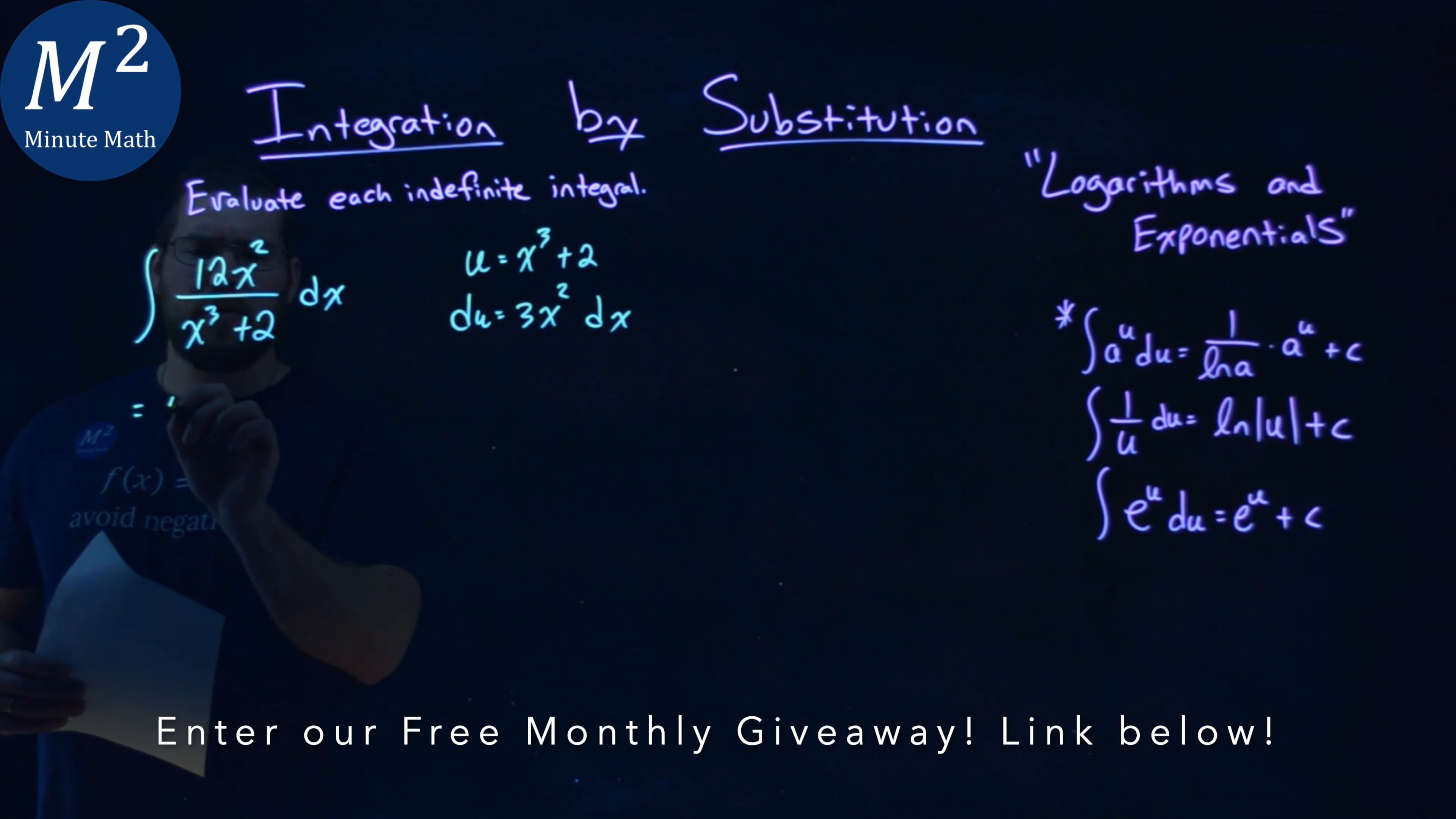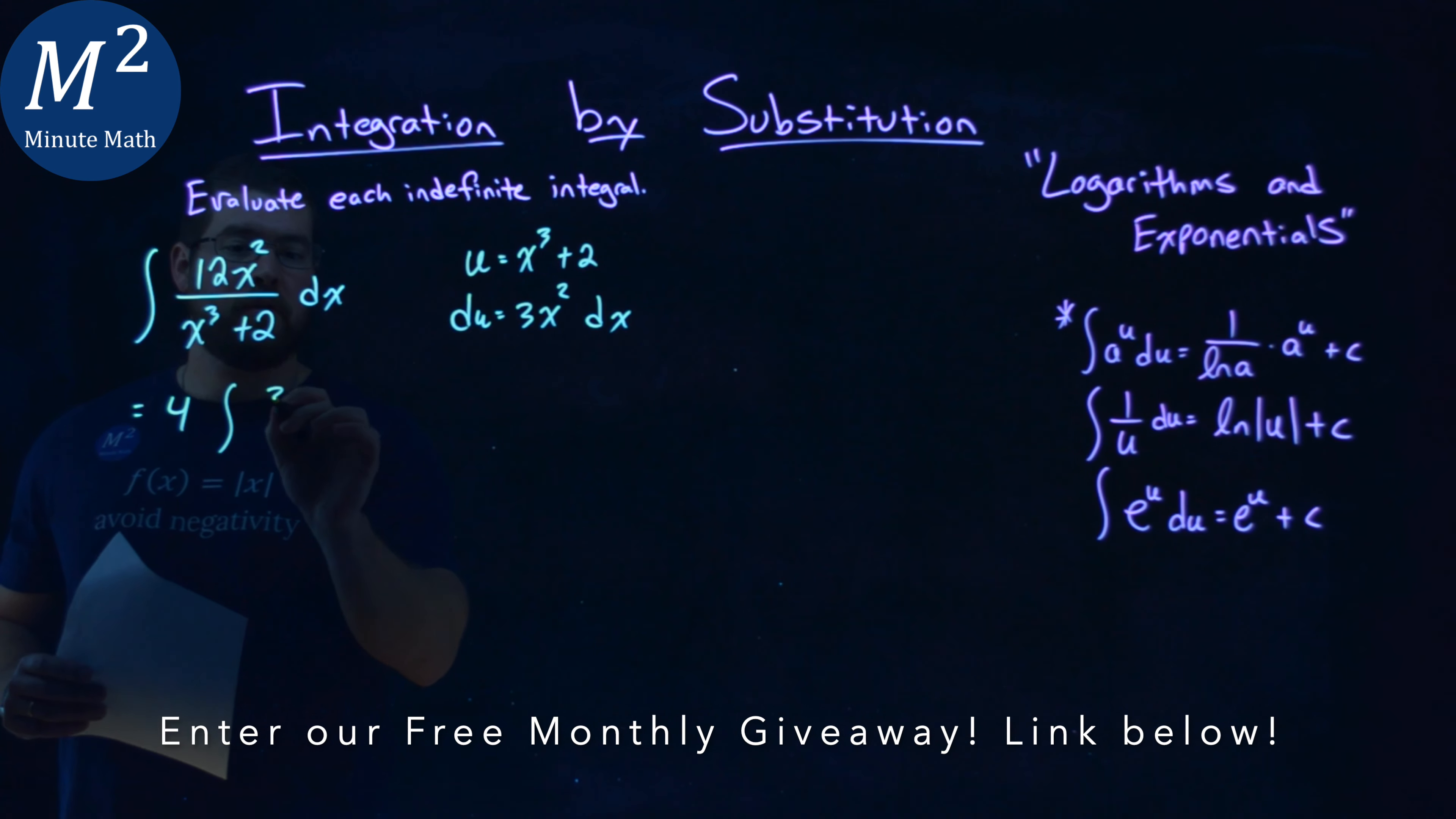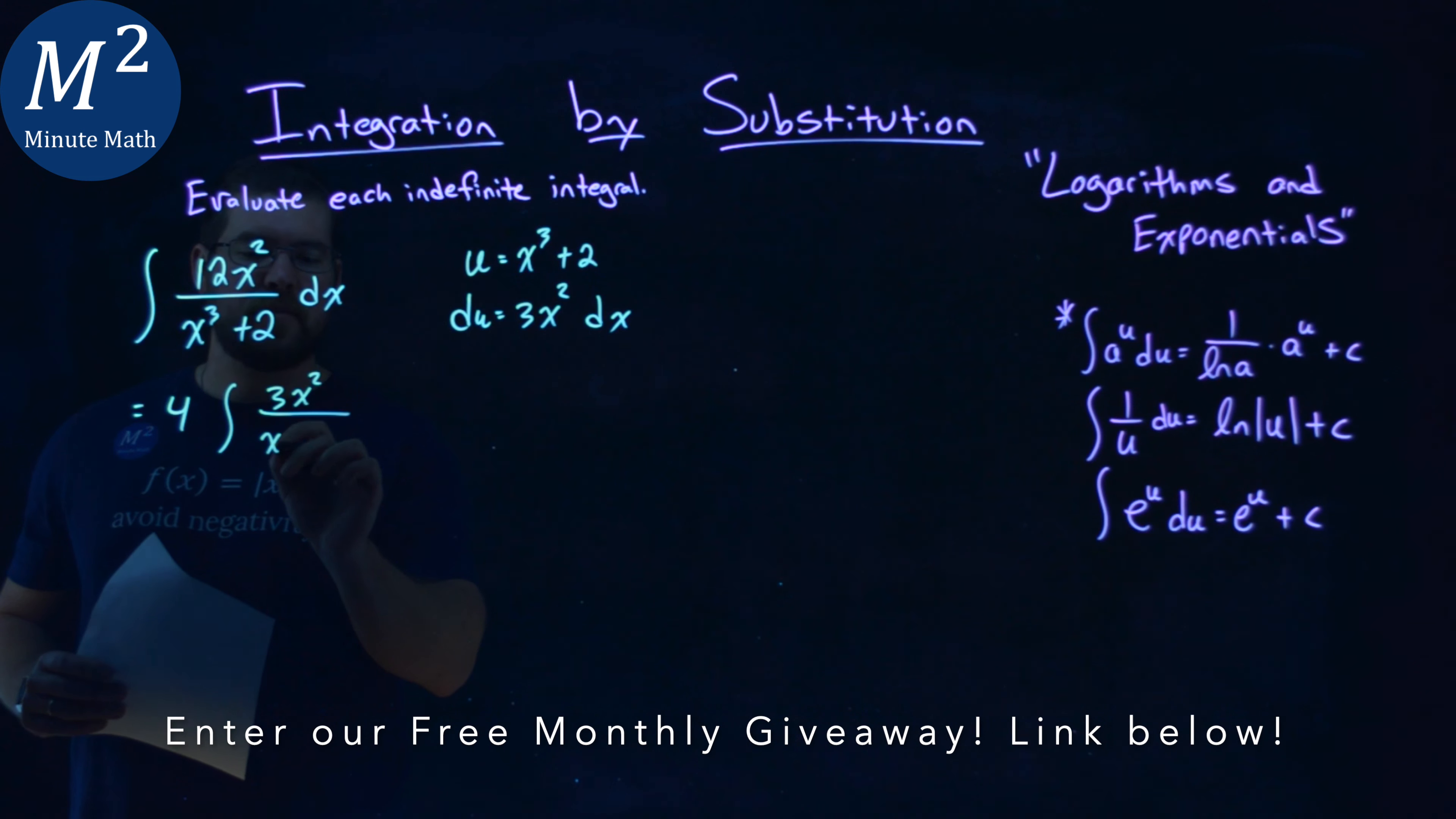So if I do that, let's pull out the 4, and I have the integral now of 3x squared over x cubed plus 2 dx.